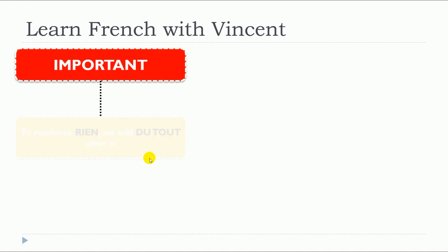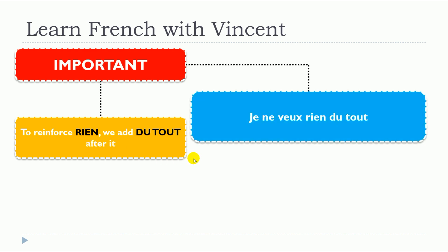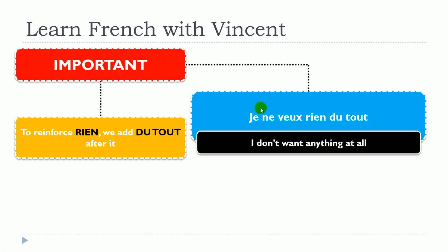So an important thing: remember that to reinforce rien, we can add du tout after it. For example, Je ne veux rien du tout. As you can see, we start with ne, after that we put rien — before and after your verb, veut — and then to reinforce it, you put du tout after rien.